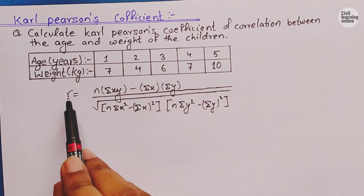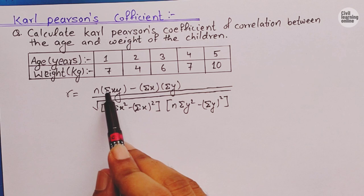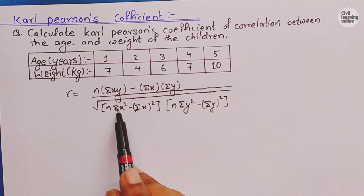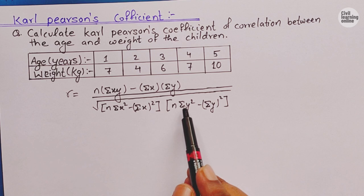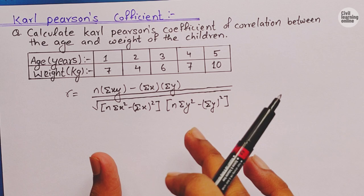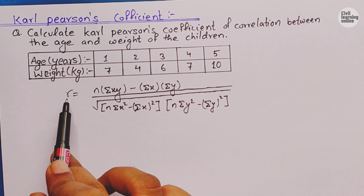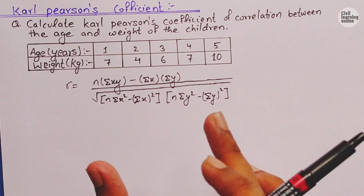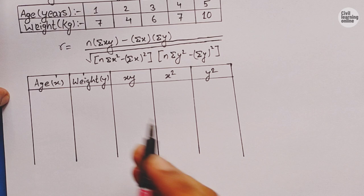Here you can see the formula for Karl Pearson's coefficient, denoted by r, which equals: n times summation of xy minus summation x times summation y, all divided by the square root of [n times summation x² minus (summation x)²] multiplied by [n times summation y² minus (summation y)²]. We need to find the value of each of these variables, then substitute them into the formula to get the final result. Let's draw a table to find these values.